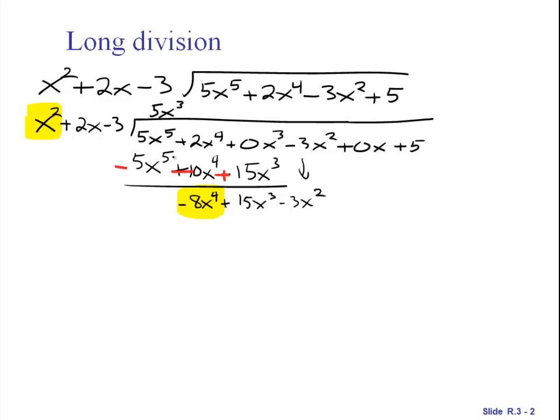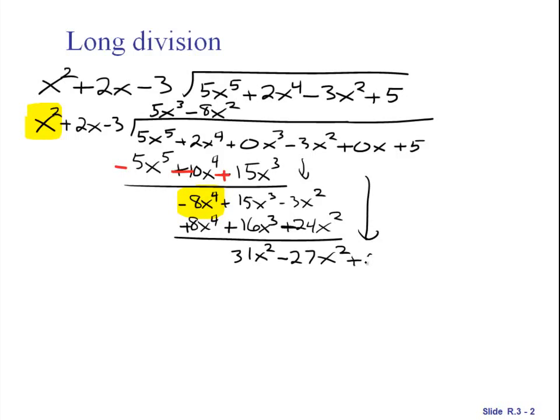It is all about getting this piece to fit into the leading term. So x squared times what gives you negative 8x to the 4th? That is going to be times negative 8x squared. That gives you negative 8x to the 4th and then plus 24x squared. Again I am going to change signs and add. So those go away. You add these and you get 31 of them and this is negative 3 and negative 24, so that is negative 27x squared.